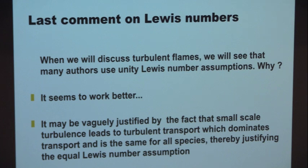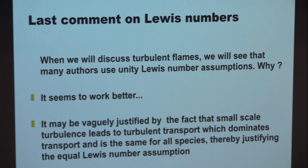I'm going to start the turbulent session soon. I want to mention that the problem of non-unity Lewis numbers is addressed by many in the turbulent combustion community with the following argument: in a turbulent flow with a lot of turbulence, what transports species is vortices — turbulent transport. And turbulent transport does not discriminate between species. If I have a big vortex, I take all species together — I don't care if you're H2 or CO, I take all of them. So we just set Lewis equal to unity for everyone.